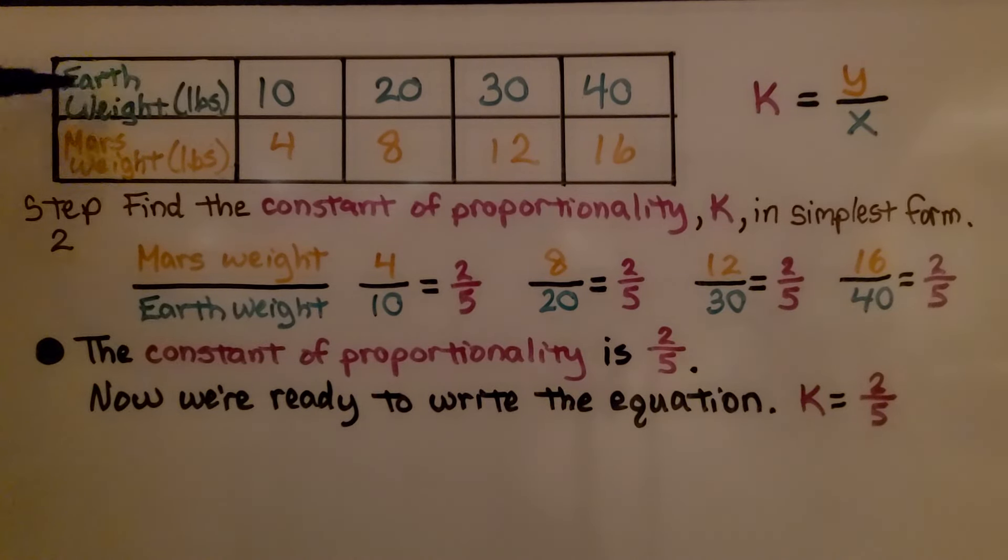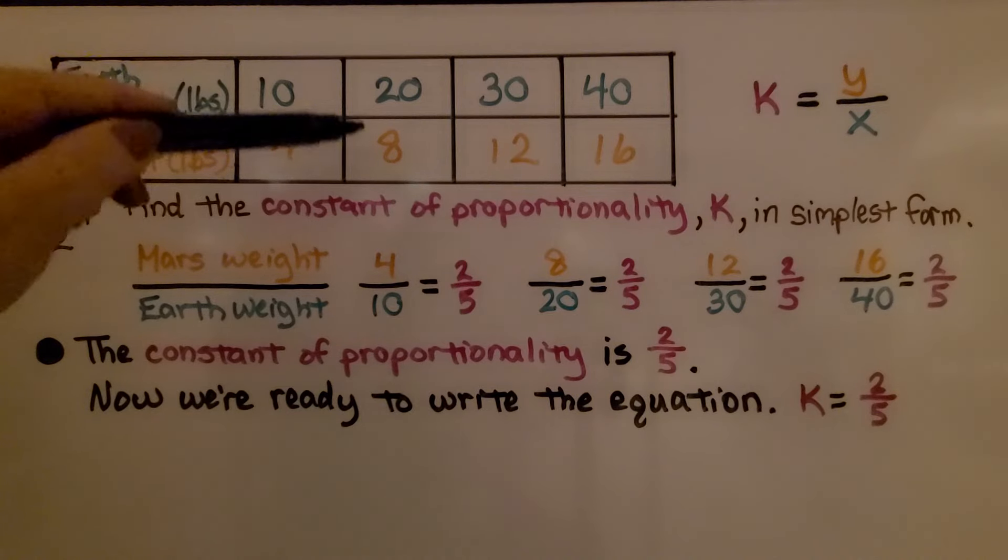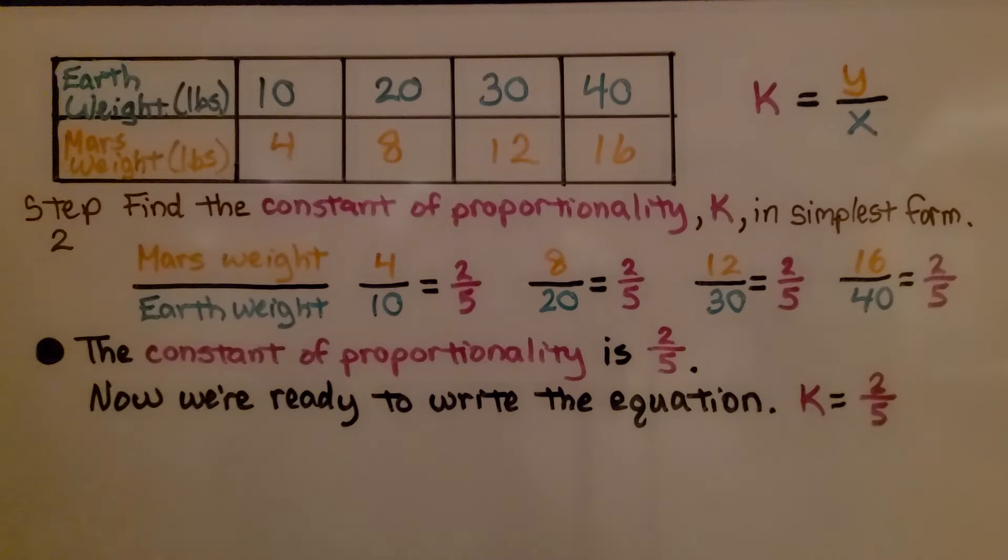So here we have our table. We have our Earth weight in pounds and our Mars weight in pounds. We had (10, 4) for our first ordered pair, (20, 8) for the second one, then (30, 12), and (40, 16).